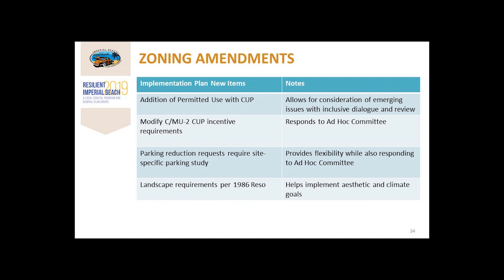Following a community survey and outreach meetings, the primary zoning amendments include the addition of a permitted use with a conditional use permit, allowing uses not identified in underlying residential zones to be proposed as long as any project meets the objective of the zone. The process would encourage dialogue and collaboration among any applicant and the neighborhood. The next item is modification of the CMU2 conditional use permit incentive requirements for projects proposing a height or density increase, requiring additional standards to increase neighborhood compatibility and community benefit. Any project requesting a parking reduction would require a site-specific parking study, and there would be new landscape requirements consistent with a 1986 resolution adopted by the City Council.